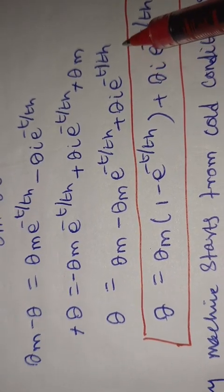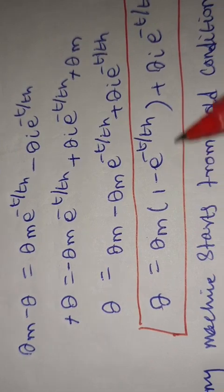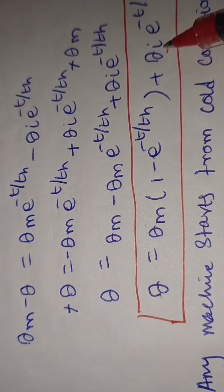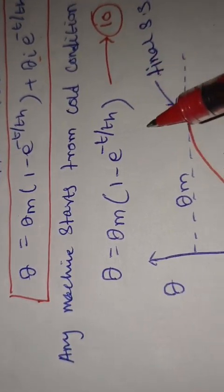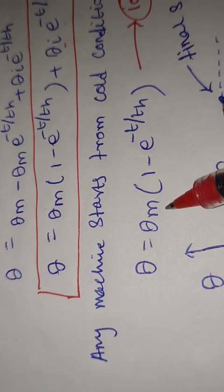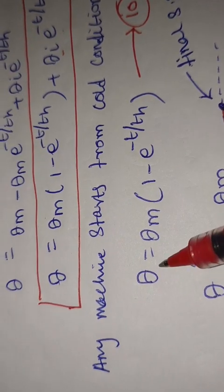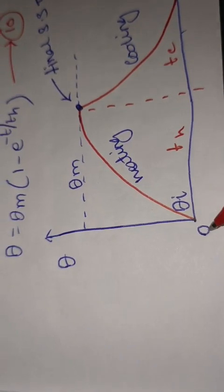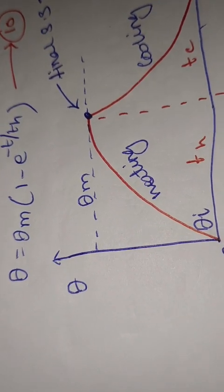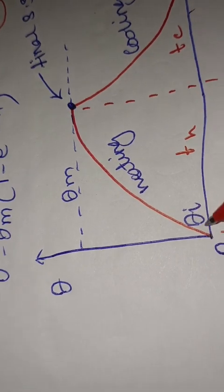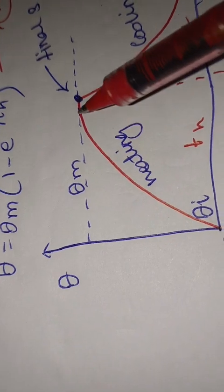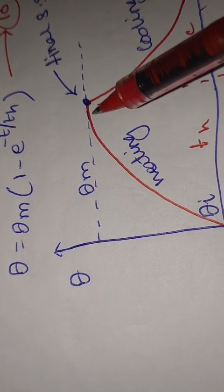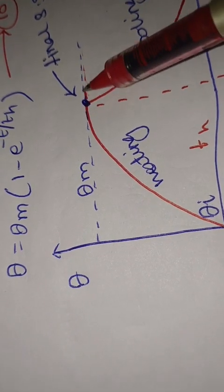Since theta_i is the initial temperature and at the starting condition the initial temperature rise is zero, we can neglect the theta_i term. The actual temperature rise during the heating process is: θ = theta_m · (1 − e^(−t/T_H)). From this expression we can plot the heating curve: starting at zero, temperature rises to reach the final steady-state value theta_m, after which it remains constant.